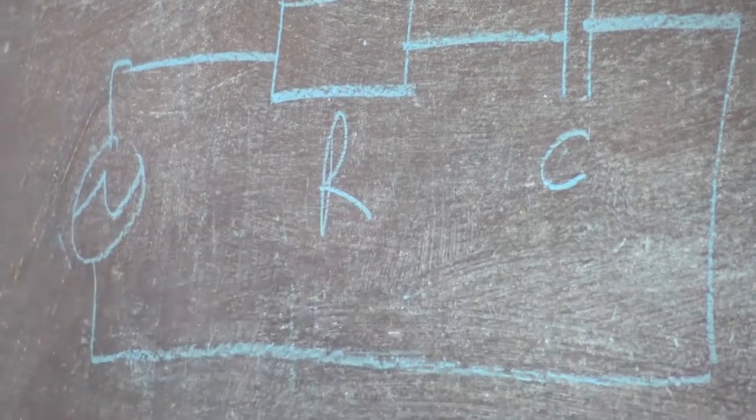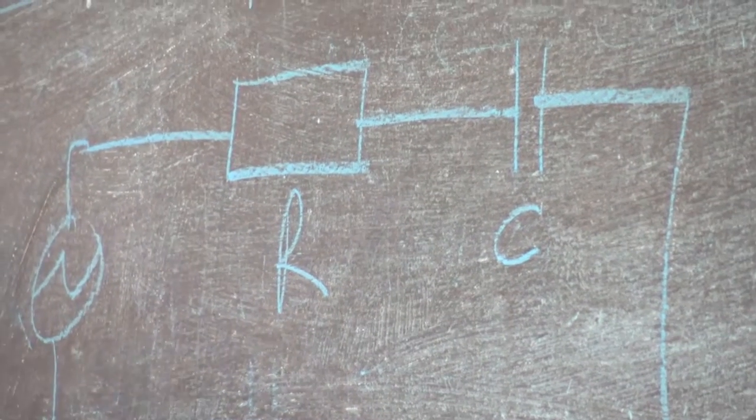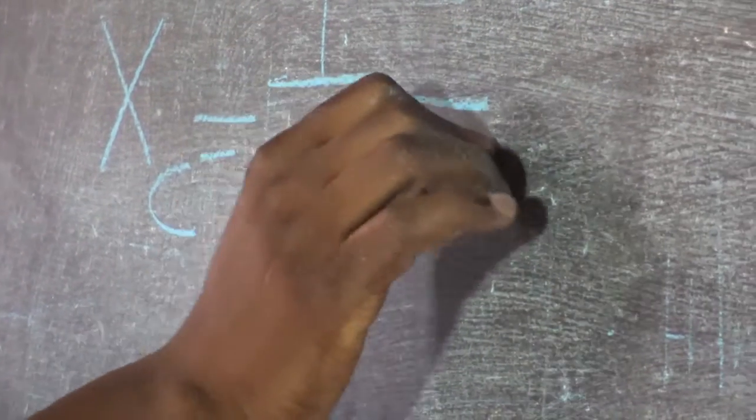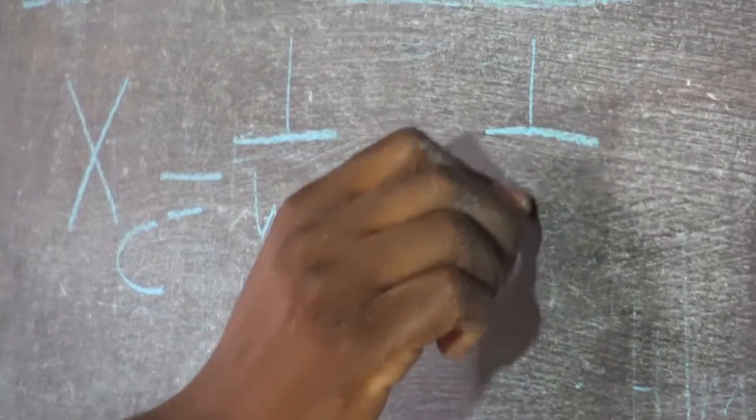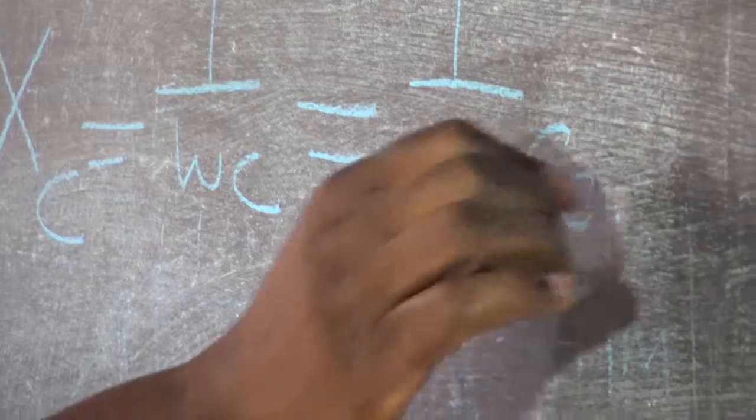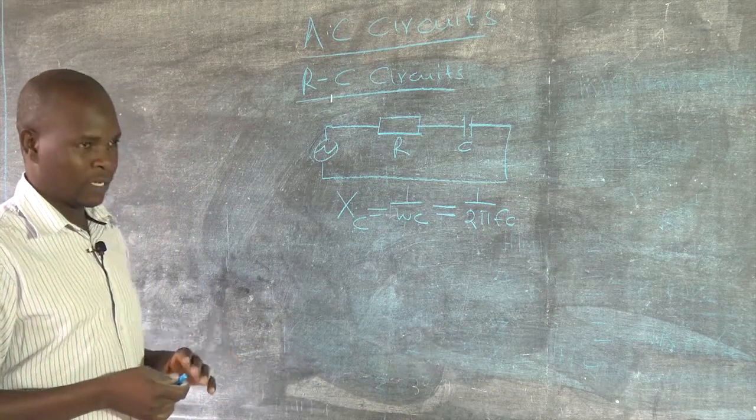You must change this C to what we call capacitive reactance. Capacitive reactance is given by XC. And it is given by one over omega C, which is equivalent to one over two pi FC. That's how we can get that formula.